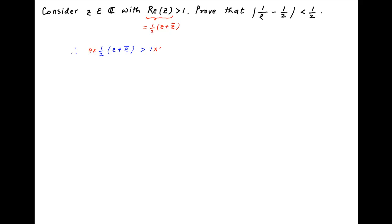Multiply both sides by 4. Therefore, we get 2z plus 2 times the conjugate of z minus 4 is greater than 0.